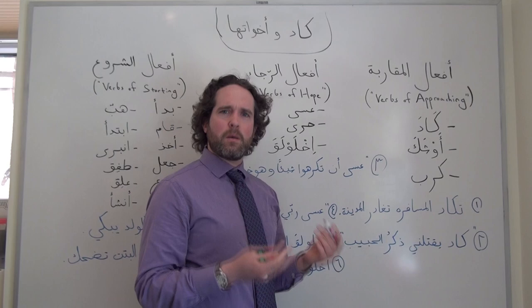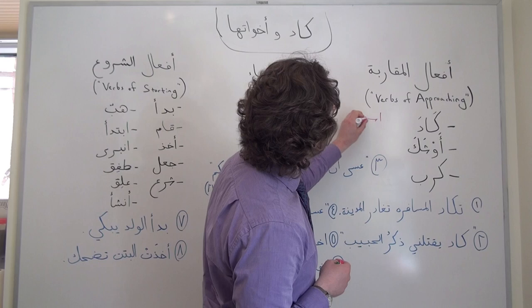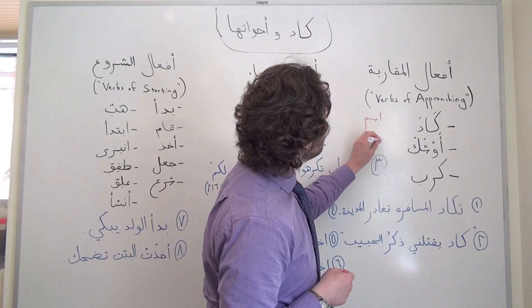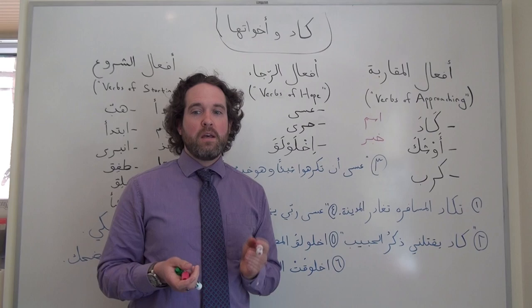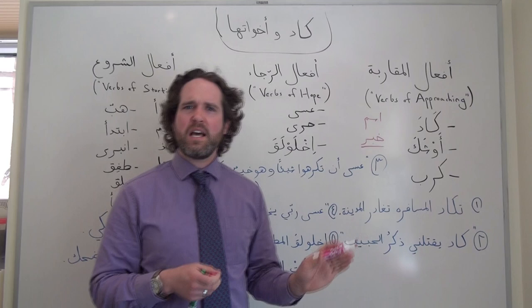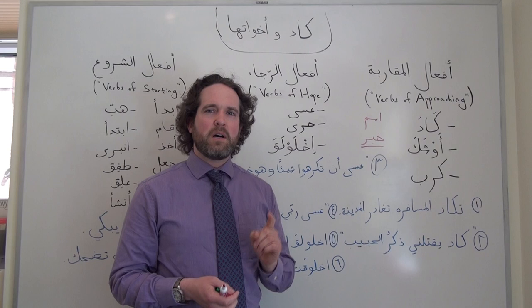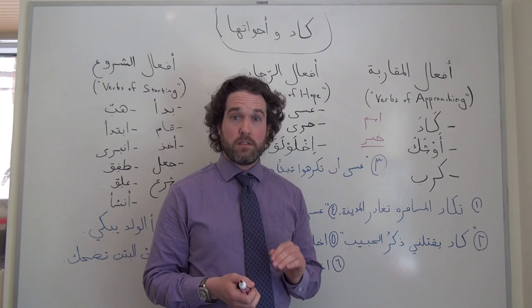When we're talking about the subject of كَادَ or one of its sisters, we use اسم to refer to it — the subject of كَادَ. And when we're talking about the predicate, the rest of the idea, we would refer to خَبَر كَادَ. With كَادَ and its sisters, though, the خَبَر is limited. With كَانَ or إِنَّ, sometimes the خَبَر can be a noun, a prepositional phrase, or a verb. With كَادَ and its sisters, the خَبَر always needs to be a present tense verb, a فعل مضارع.